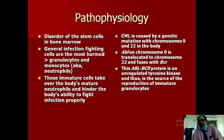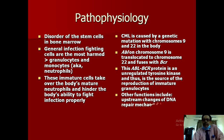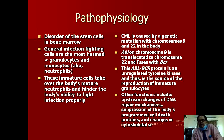This simple production of tyrosine kinase protein changes the whole scenario — immature blasts keep on producing symptoms that are almost incurable until the death of the patient, though patients do survive for many years. This is not a fully curable disease. Additional effects include upstream changes of DNA repair mechanisms, suppression of the body's programmed cell death proteins, and changes in the cytoskeletal structures.